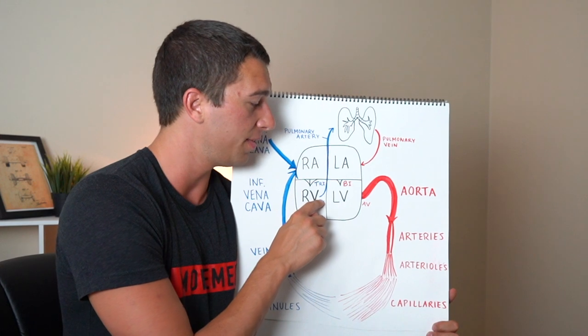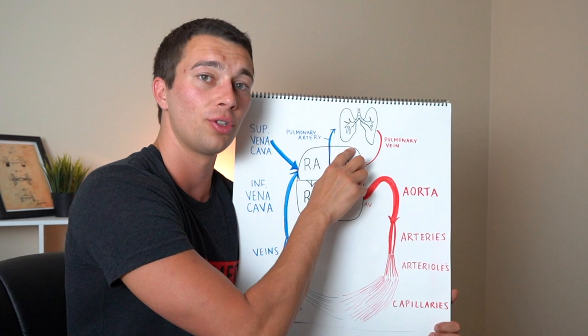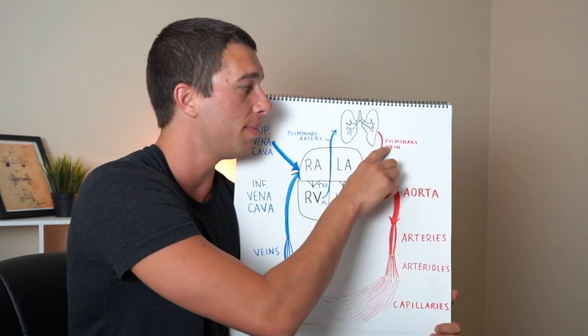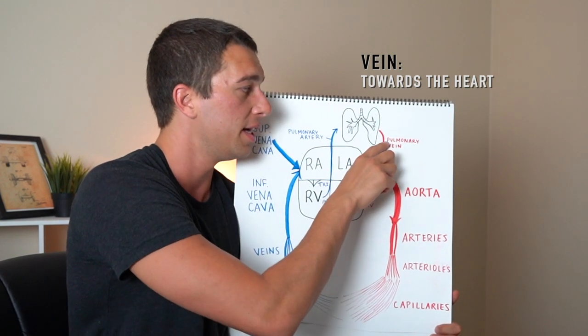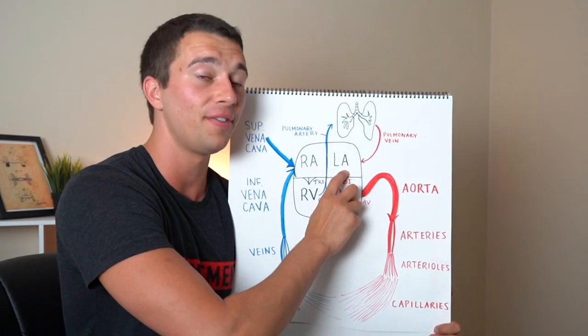So through the pulmonary valve through the pulmonary artery to the lungs there's going to be gas exchange through the alveoli into the capillaries here. Then we're going to go into the pulmonary vein. The pulmonary vein, vein meaning towards the heart, is going to be now oxygenated blood coming back to the left atrium.